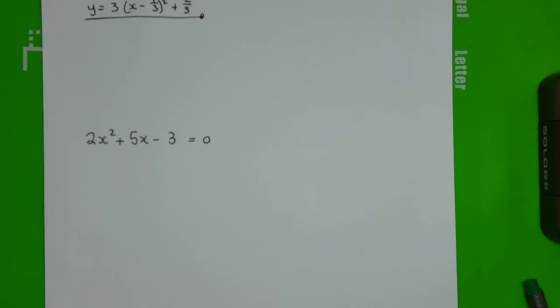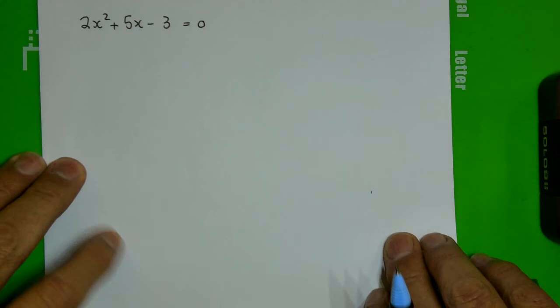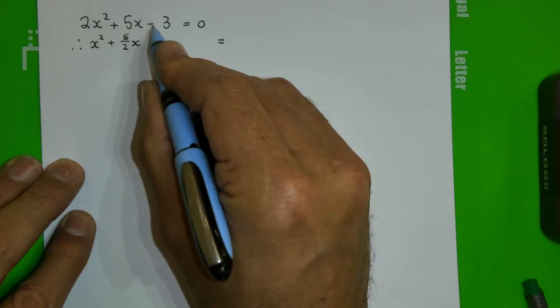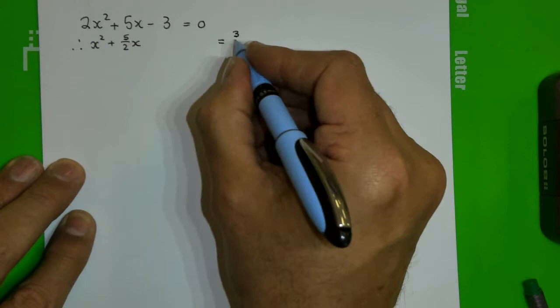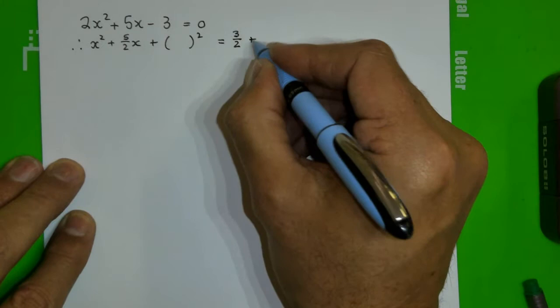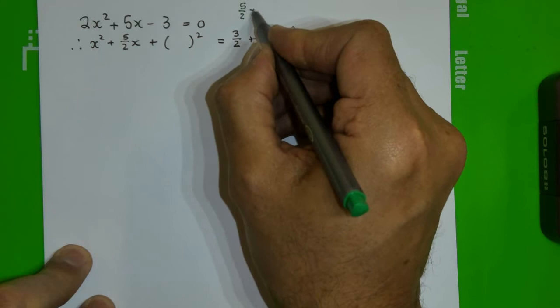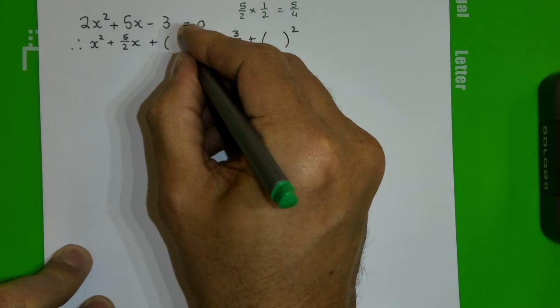If one side is equal to 0, it makes it a bit cleaner because I can divide the 2 away. So I get x² + 5/2 x. Since this equals 0, I throw the 3 over to make it a positive 3/2. Now I need to find out what to add to both sides — my middle term is 5/2, so I take 5/2 and multiply by 1/2, which gives me 5/4.